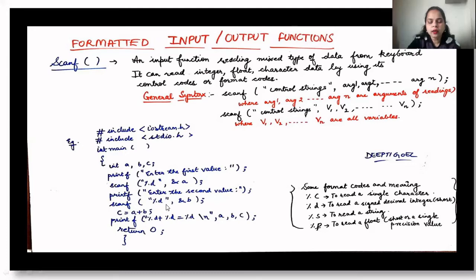In the program we are adding two numbers a and b, entering their values using the formatted input function. We have printf writing "enter the first value" in inverted commas followed by a semicolon. For printf we don't use the insertion operator used in C++ cin/cout. Then scanf in the bracket requires the control strings — since a and b are integer values, we use the control string for integers.